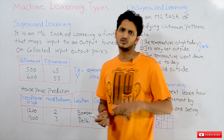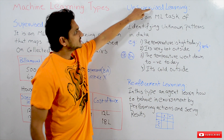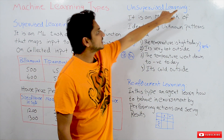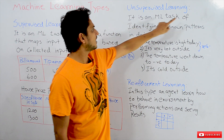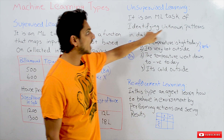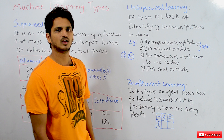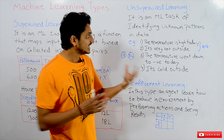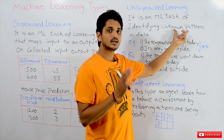Coming to unsupervised learning — the definition states it is an ML task of identifying unknown patterns in the data. The key word here is 'unknown patterns.'